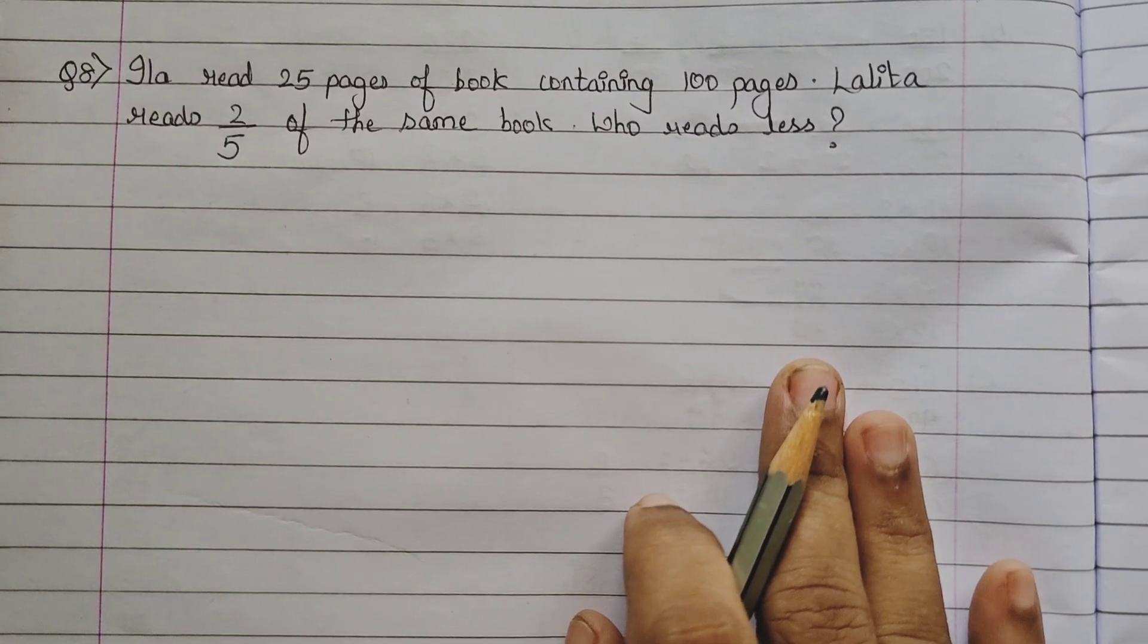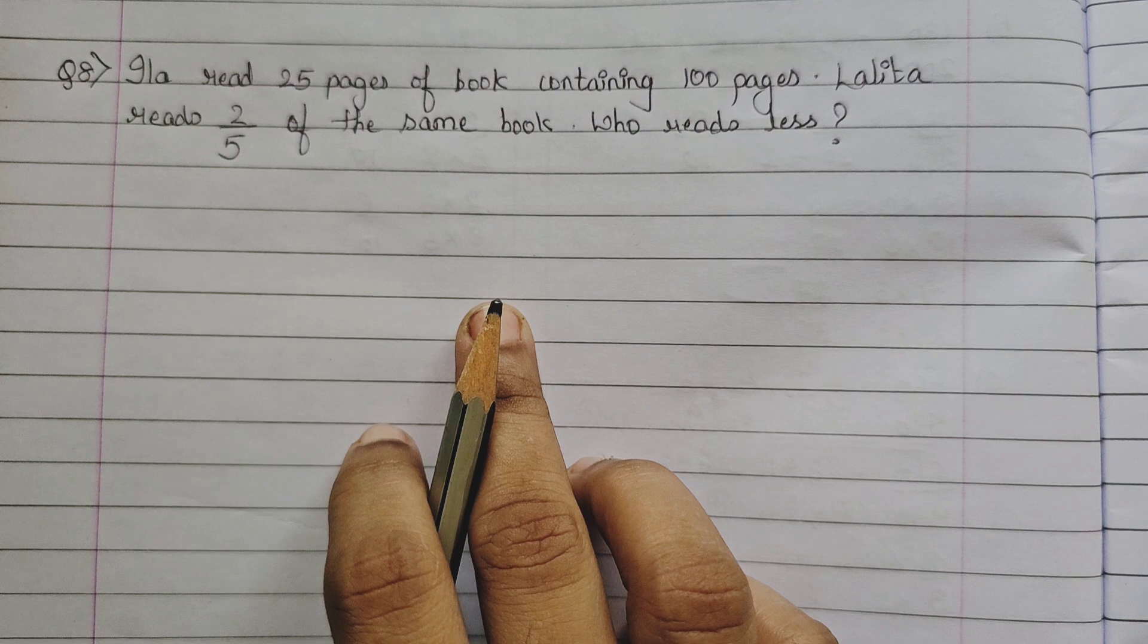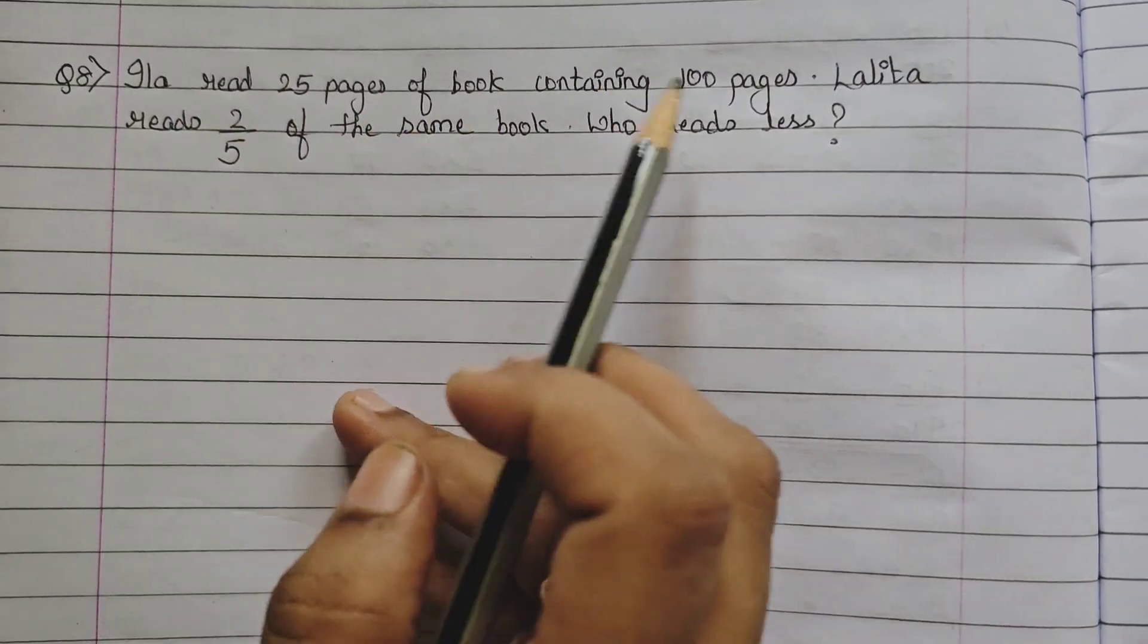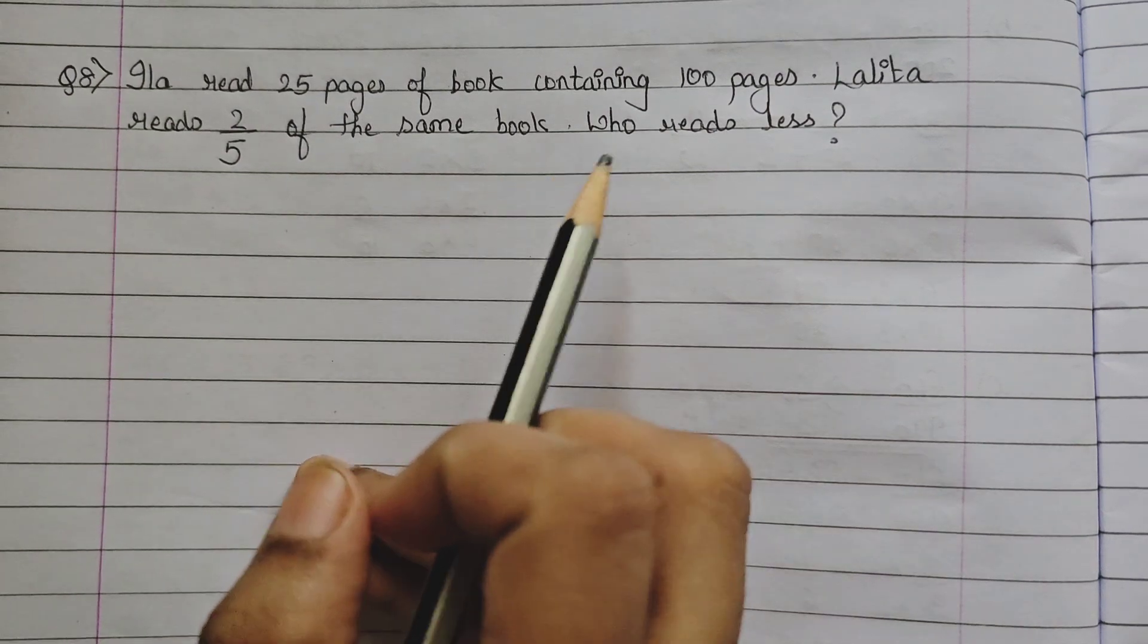Hello kids, so today we are going to see how to solve question number 8 from exercise 7.4. The question says, Ila read 25 pages of a book containing 100 pages. Lalita reads 2 upon 5 of the same book. Who reads less?